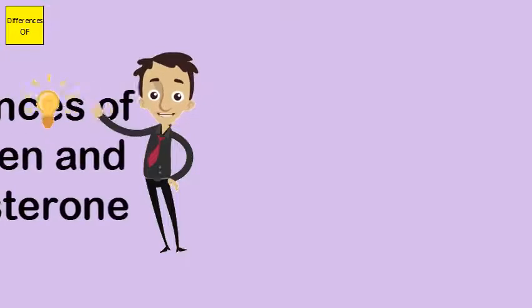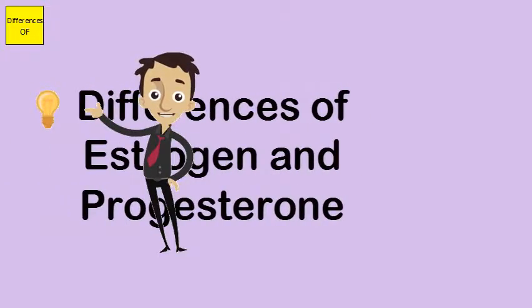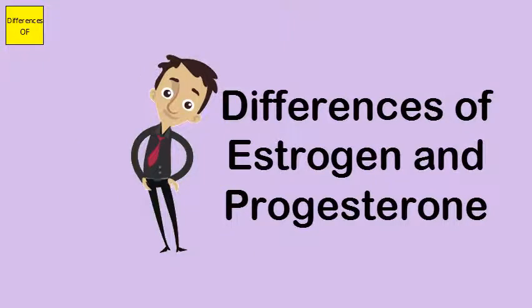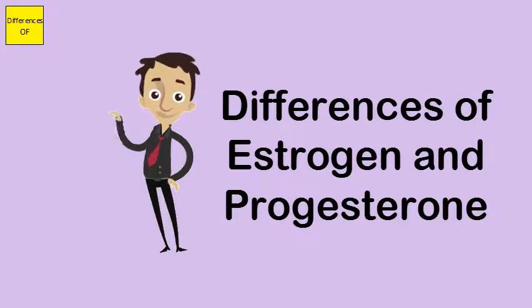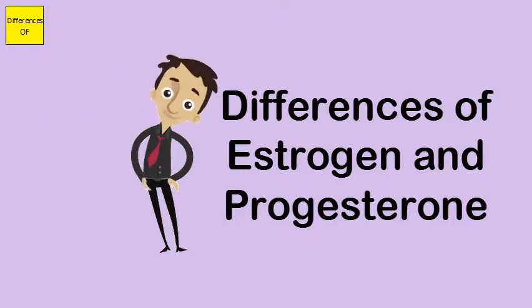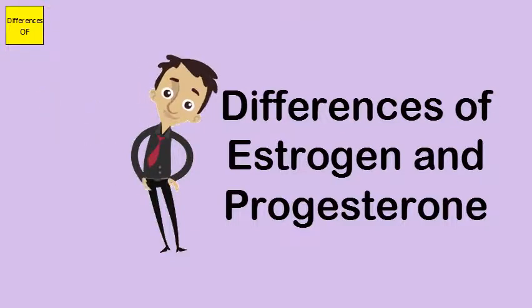Differences between estrogen and progesterone. Estrogen is secreted prior to ovulation, while progesterone is secreted after ovulation. Estrogen is produced by the growing Graafian follicle, whereas progesterone is produced by the ruptured and emptied follicle called the corpus luteum.